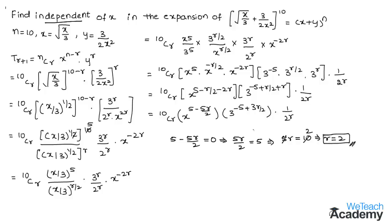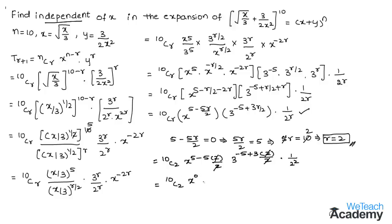Now let us substitute r = 2. We get 10C2 · x^(5 − 5×2/2) · 3^(−5 + 3×2/2) · (1/2²). Cancelling: the power of x becomes 5 − 5 = 0, and the power of 3 becomes −5 + 3 = −2. So this gives 10C2 · x^0 · 3^(−2) · (1/4), which is 10C2 · 1 · (1/9) · (1/4).